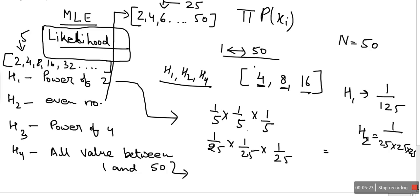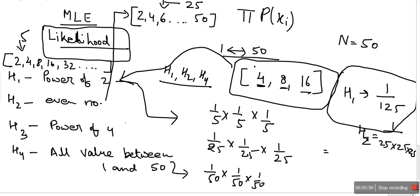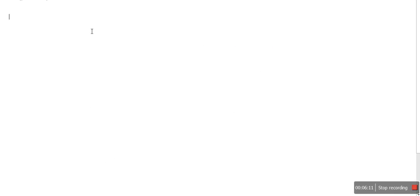For h4, the total number of data points is 50, so each data point has a probability of 1/50. So it's 1/50 times 1/50 times 1/50. Comparing these three, h1 has the greatest likelihood value. In other words, for this data set there are higher chances of belonging to hypothesis h1 compared to the others. The likelihood for this data set to belong to h1 is higher than h2 and h4. That is the concept of likelihood — just a multiplication of probabilities.